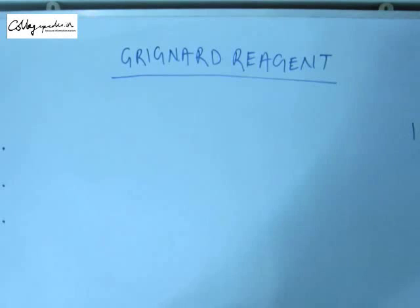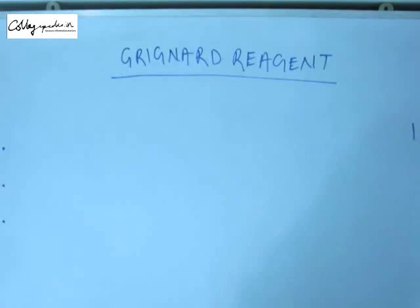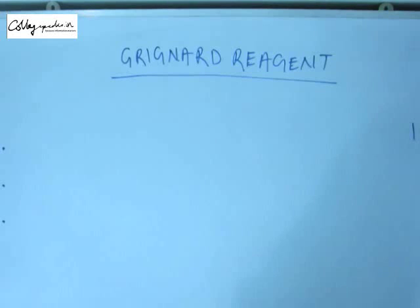Hello everyone. In this video lecture, we will study about a very important organic reagent — Grignard reagent. We will study about the preparation of this reagent and almost all the reactions of the reagent. This is a very important reagent because it has immense use in the conversion of one functional group to another. Throughout the course, we will use this reagent to prepare different functional groups, and it is worth studying before we formally start the preparations.